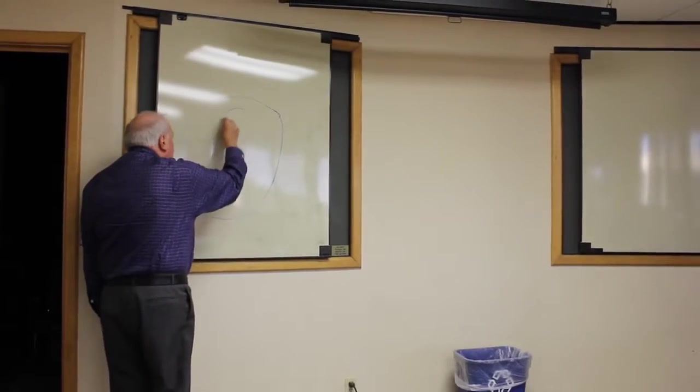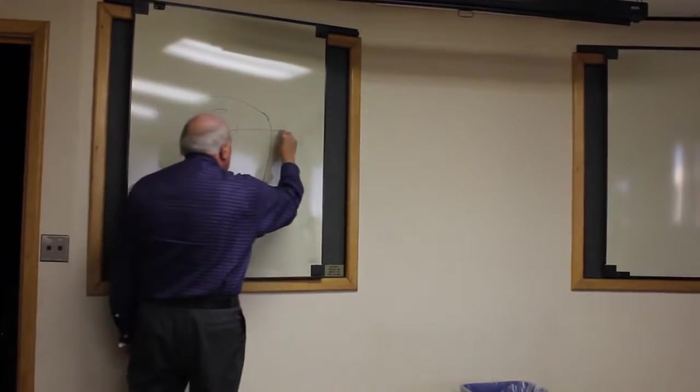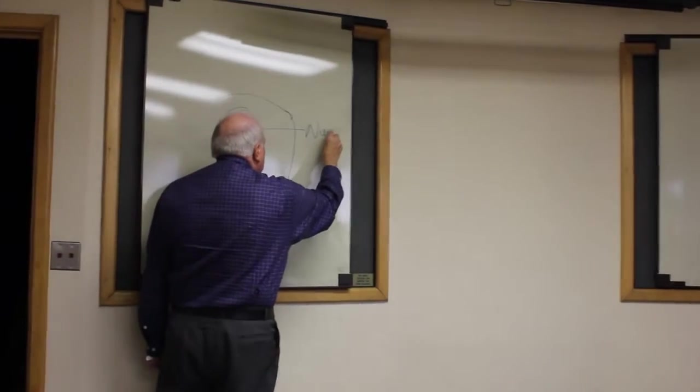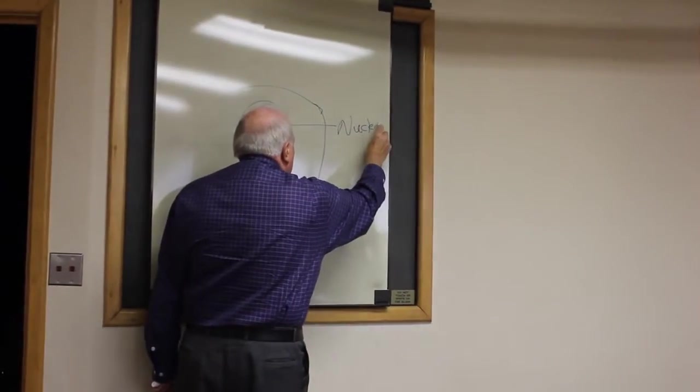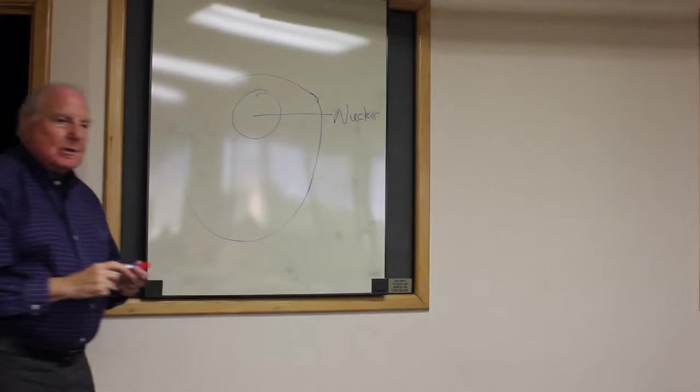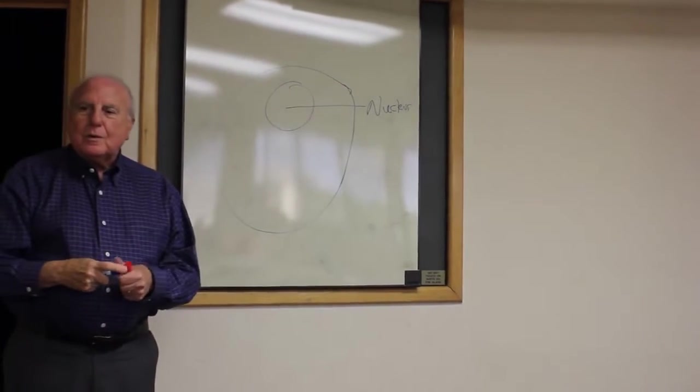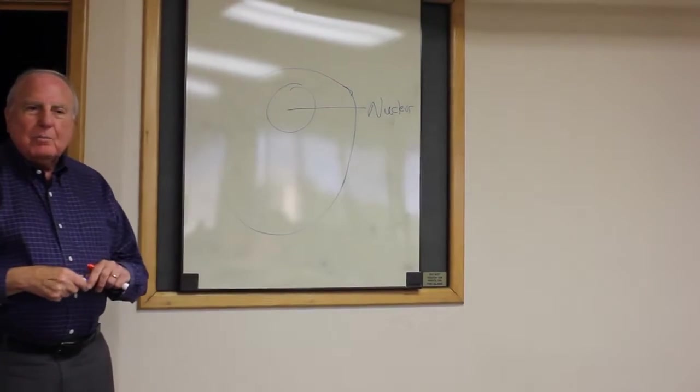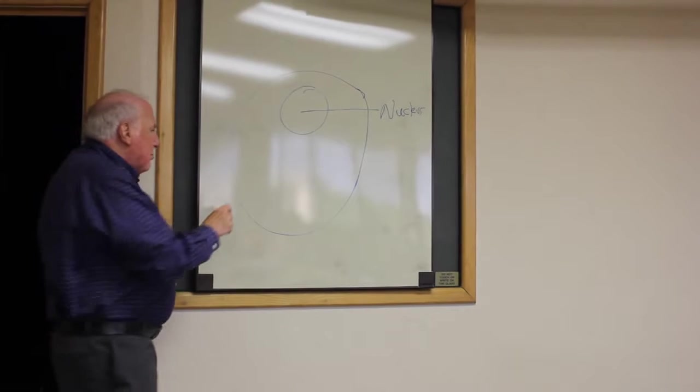So if you were to take a look at a cell and its nucleus, let's label them so you'll remember. Here's the nucleus. The nucleus is the command center of the cell. It gives out the orders about what the cell is going to be doing today, what products it's going to be making.